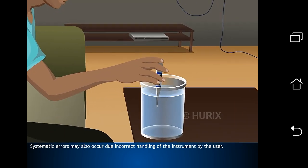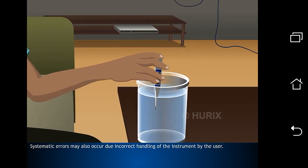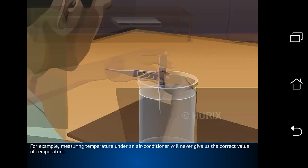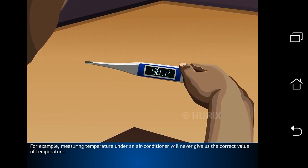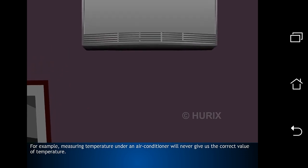Systematic errors may also occur due to incorrect handling of the instrument by the user. For example, measuring temperature under an air conditioner will never give us the correct value of temperature.